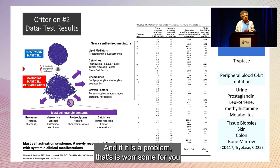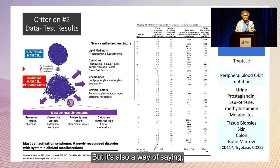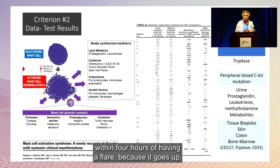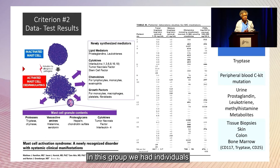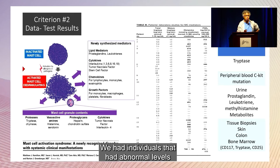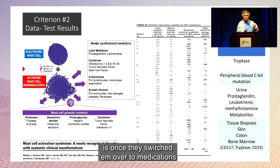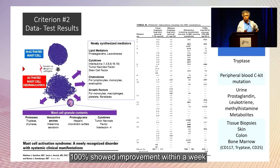If the tryptase is elevated, that's as worrisome as having a genetic disorder with the mast cells, and it tells you where you are right now. If you have a flare, check the tryptase within four hours — if it goes up, your mast cells are more twitchy. In this group, individuals had abnormal tryptase levels, abnormal methyl histamine, or elevated prostaglandins. Once switched over to medications targeting the mast cell compartment, 100% showed improvement within a week of the new medication regimen.